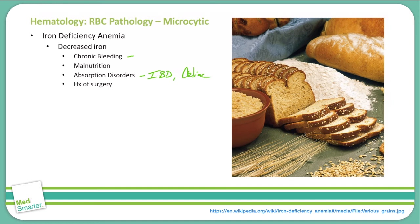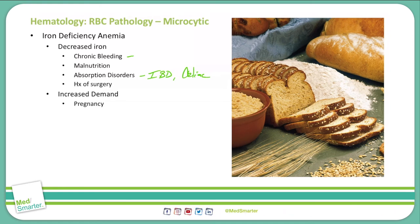The second disorder that can cause iron deficiency anemia is due to an increase in demand. This is often seen in pregnancy. In pregnancy, there is an increased demand for iron as blood volume and blood cells increase, but if there is not an increase in iron in the diet or in vitamins, then there will be a decrease in iron in each blood cell.